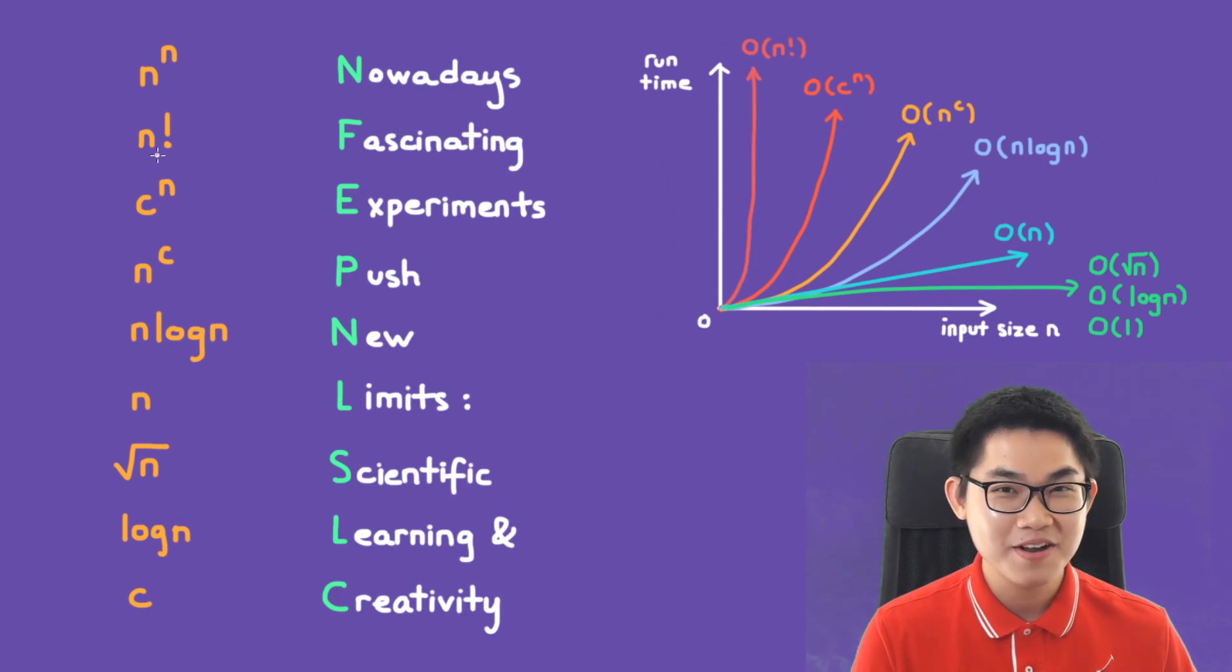And F, guess what, it's for factorial. And the last N is N^N. So this is a trick that I use to memorize this list.